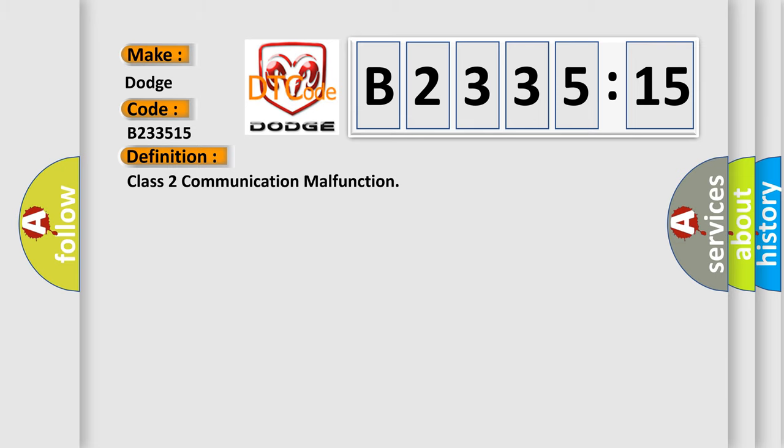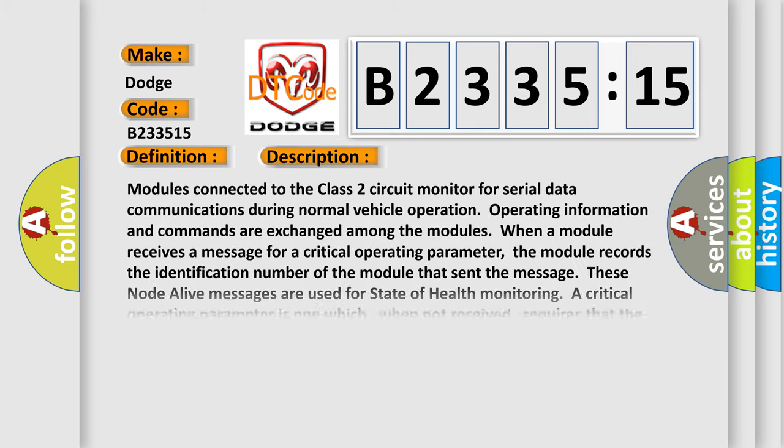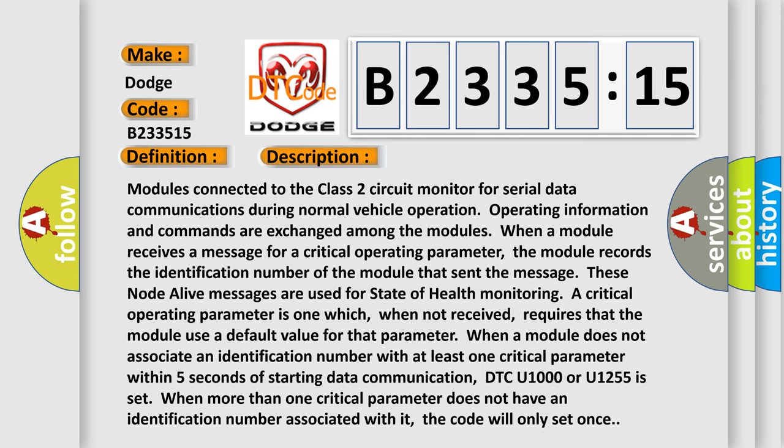The basic definition is Class 2 communication malfunction. Modules connected to the Class 2 circuit monitor serial data communications during normal vehicle operation. Operating information and commands are exchanged among the modules. When a module receives a message for a critical operating parameter, it records the identification number of the module that sent the message. These node alive messages are used for state of health monitoring.